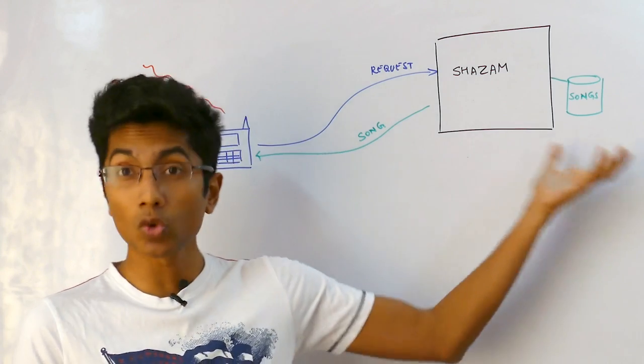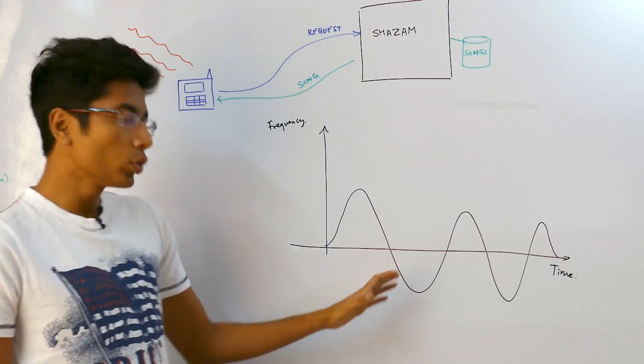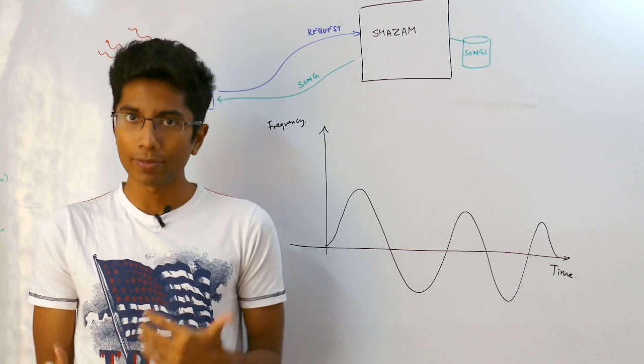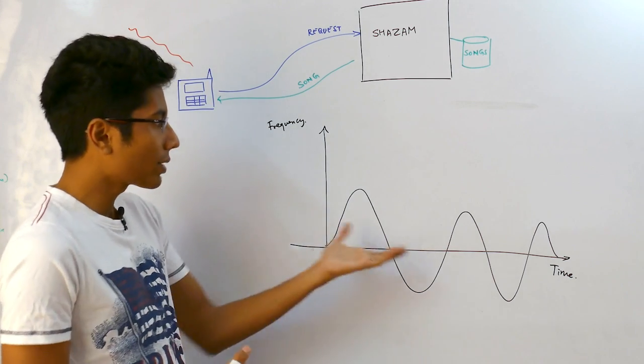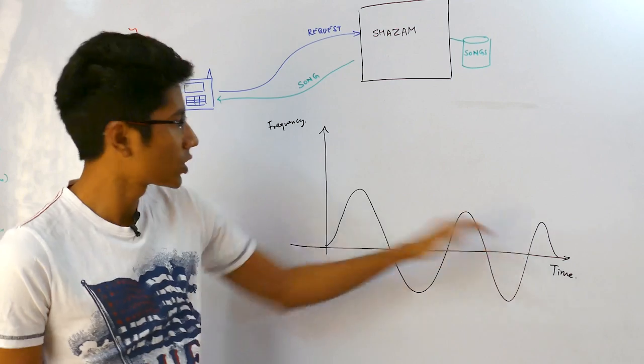Let's understand how we're going to be storing these songs. The first thing we'll do is define the song in mathematical terms. A song is after all a sound wave and a sound wave can be represented using a graph for time versus frequency.